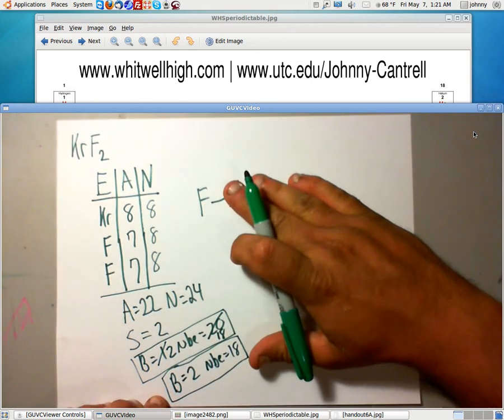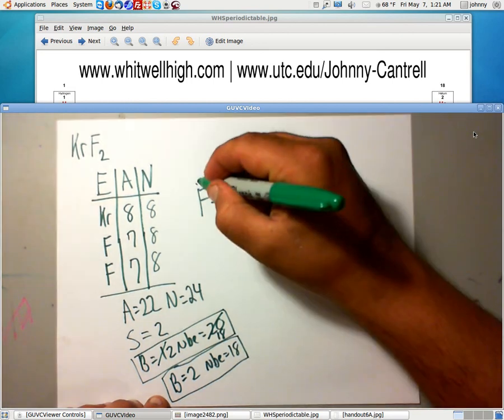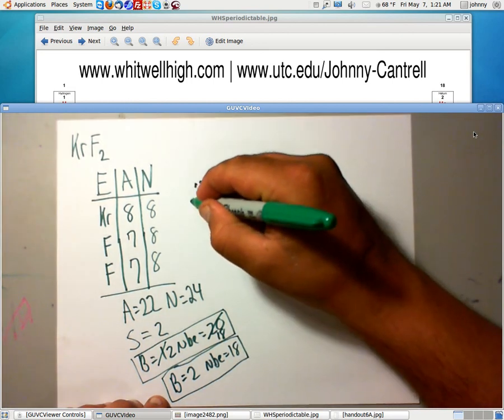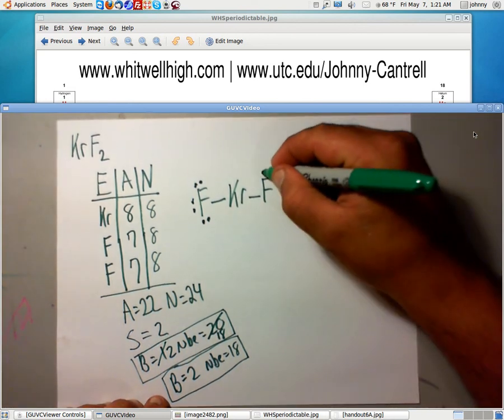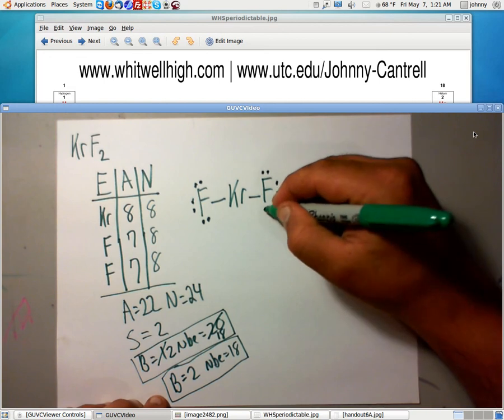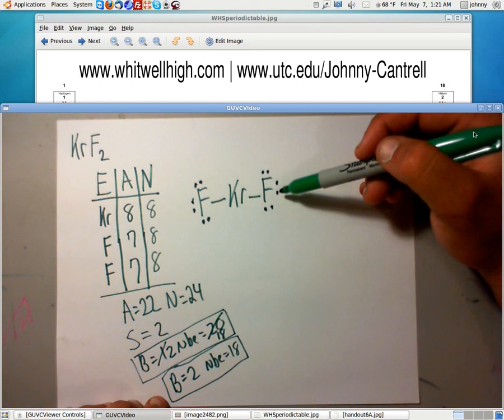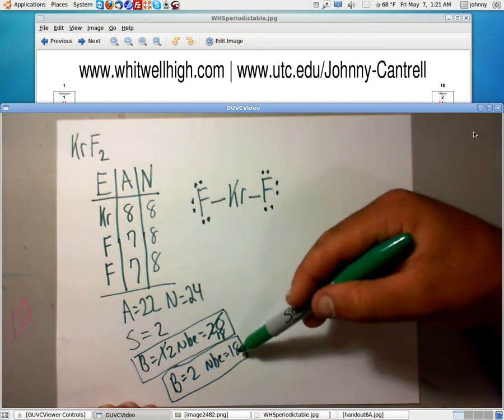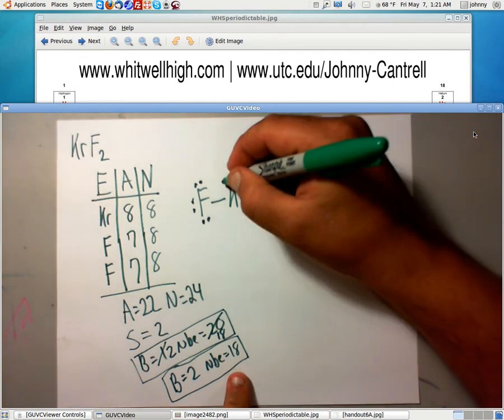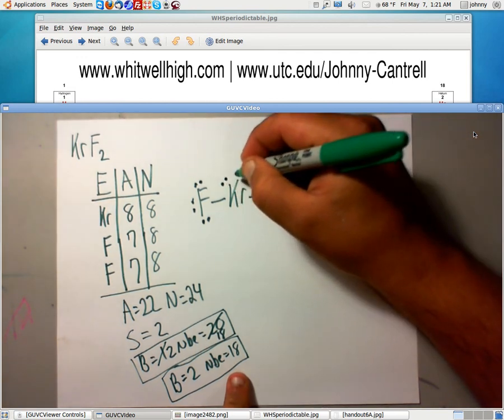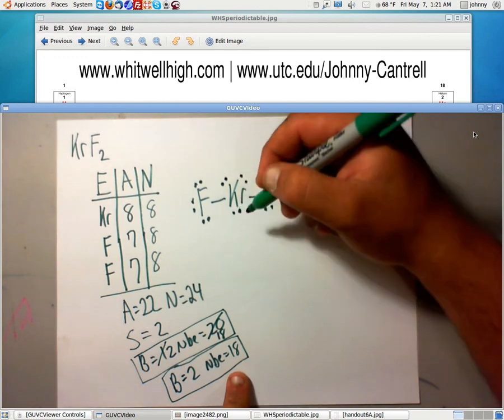Now give F an octet. This F has 2, there's 4, here's 6, and finally there's 8. Same thing on this one. This F needs an additional 6 electrons. It now has them. It's got an octet. Now if you look, we've used 2, 4, 6, 8, 10, 12 dots. I've got 6 dots left. I have to use 18. So that means they're going to go on the central atom. 1, 2, 3, 4, 5, 6.